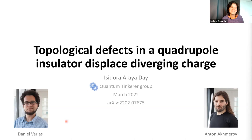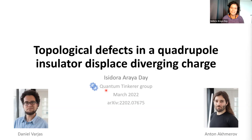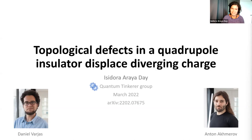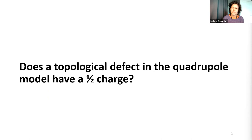Thank you all for coming to listen to this talk about the work that we recently put in the archive with Daniel and Anton. The title of our work is called 'Topological Defects in a Quadrupole Insulator: Displaced Diverging Charge.' So this is very much a spoiler of the talk. The central question we address: does a topological defect in the quadrupole model have a one-half charge?